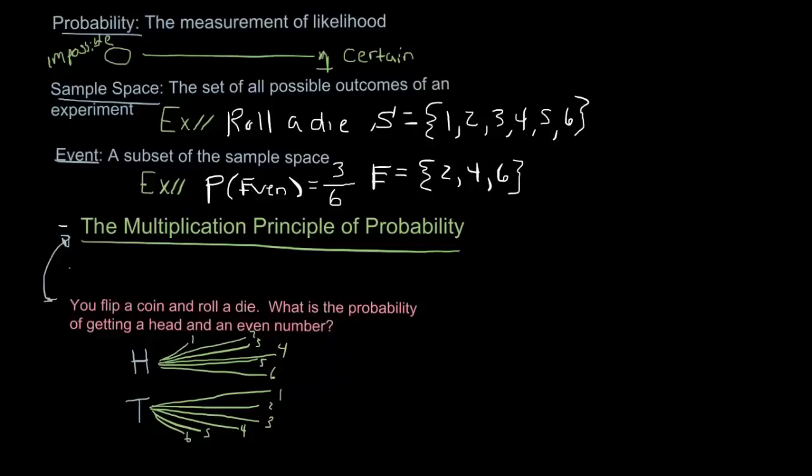And how many of those are the events ahead with an even number? Well, that would just be, since it's a head, we can limit ourselves to the top diagram. And the even numbers here are the 2, the 4, and the 6. So the probability of a head and even number, H and E, is equal to 3 out of the total 12 possibilities, or 1 fourth.